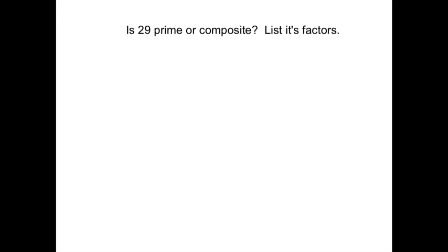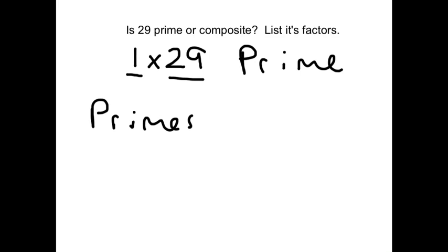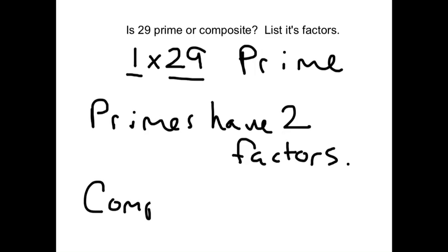Let's try another one. What is 29 prime or composite? Let's list its factors, and that will help us out. So 29 is only 1 times 29. That's only 2 factors, so that is prime. So the definition is primes have 2 factors. Composite numbers have more than 2.